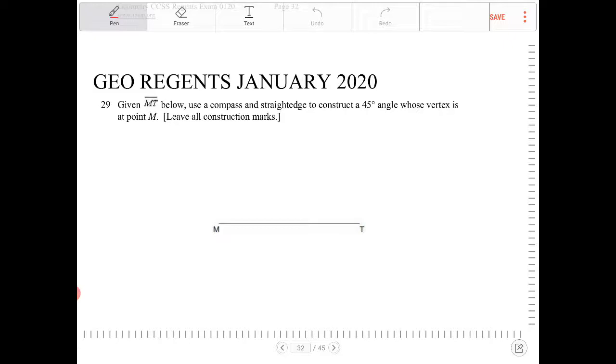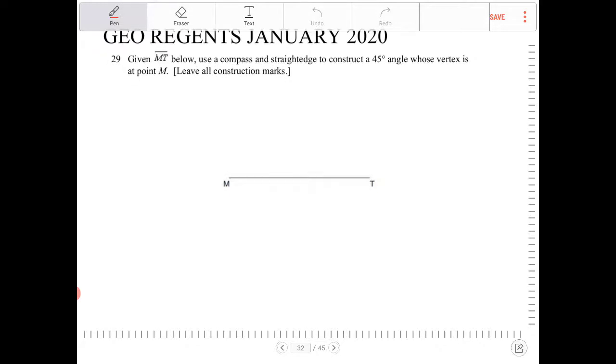There are two ways that I see approaching this problem. One way is we can draw a line perpendicular to line MT passing through point M. And then after we have that line drawn in, we can bisect the 90 degree angle forming a 45 degree angle.